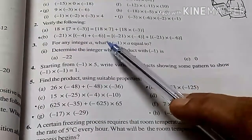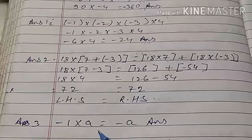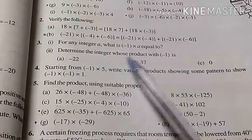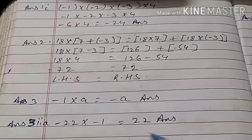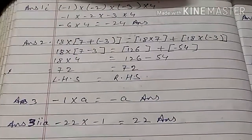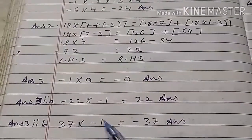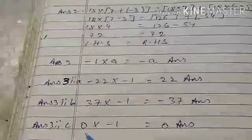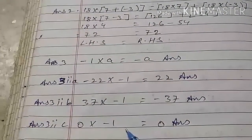Question number 3, first part: for any integer A, what is minus 1 multiply A equal to? Minus 1 multiply A must be equal to minus A. Second part: determine the integers whose product with minus 1 is: A) minus 21 — the answer is 21; B) 37 — when we multiply 37 by minus 1 we get minus 37; C) 0 — when we multiply 0 by minus 1 we get 0, as 0 multiplied by any number gives 0.